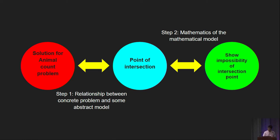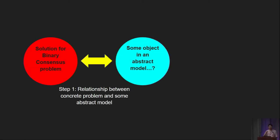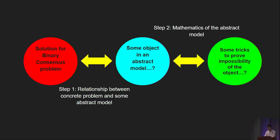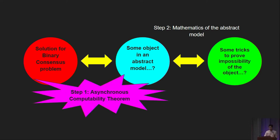This problem is relevant because this plan of attack is exactly the same as how we're going to prove the binary consensus problem is unsolvable. We're going to draw a connection between a protocol for the binary consensus problem and finding an object in some abstract model, then prove that this object couldn't exist. As a result, there is no protocol for the binary consensus problem. As you might have guessed, this abstract model is topology, and the result establishing this relationship between distributed systems and topology is a theorem called the asynchronous computability theorem.